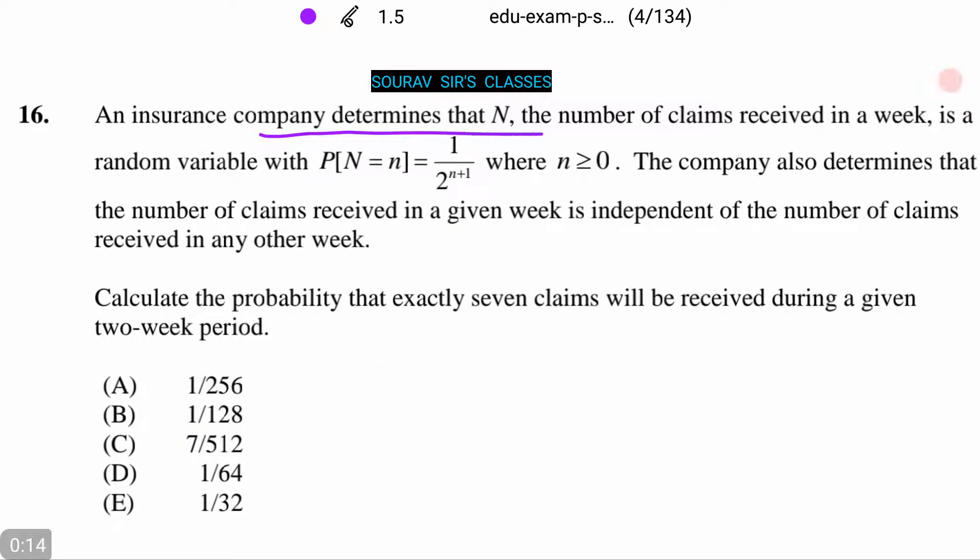Now, an insurance company determines that N, the number of claims received in a week, is a random variable with P(N=n) = n/(2^(n+1)), where n ≥ 0. The company also determines that the number of claims received in a given week is independent of the number of claims received in any other week.